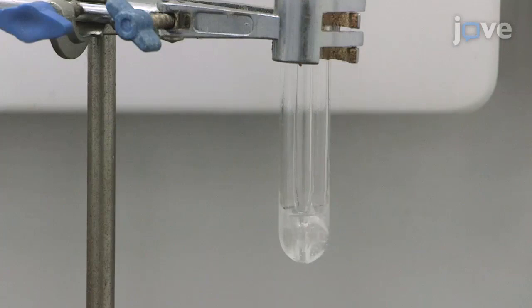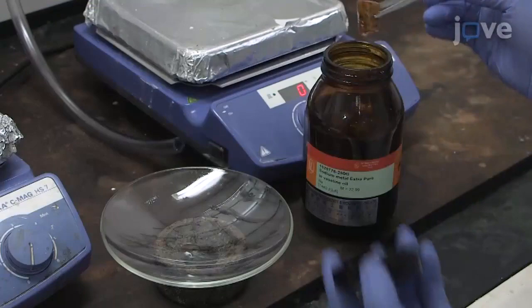From then on, keep the flask filled with flowing nitrogen gas at a slight positive pressure. Next, remove a block of metallic sodium from the mineral oil in which it was stored.